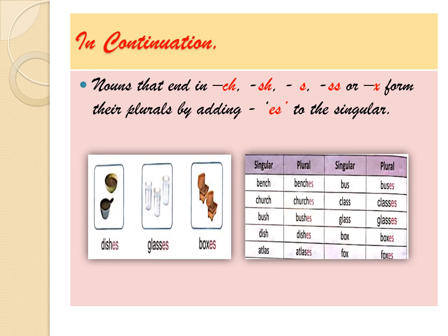Rule two: nouns that end in CH, S, SH, SS, or X form their plural by adding ES to the singular. So the singular word ending in CH, SH, SS, or X is changed to plural by adding ES. For example: bench/benches — the word bench ends in C-H, so we add E-S to get B-E-N-C-H-E-S. Church/churches, bush/bushes, dish/dishes.